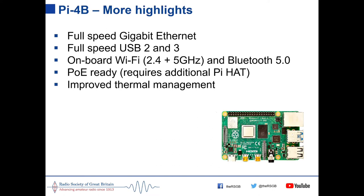Thermal management has been improved. The system-on-a-chip now uses a metal case to help with heat dissipation, and the firmware has been updated to reduce general heat output. For serial port users, such as those using a GPS board for accurate timing, the Pi 4 now has four additional hardware serial ports on the new processor, whereas previously the hardware serial port was shared with Bluetooth.